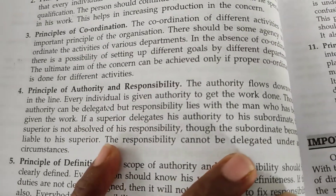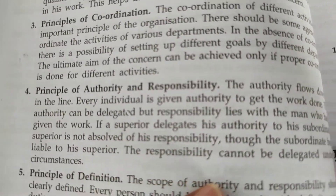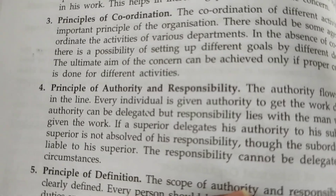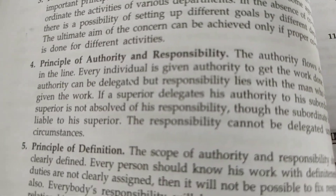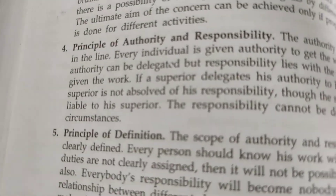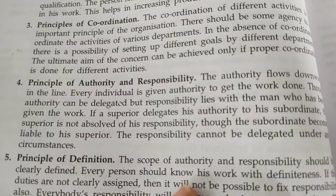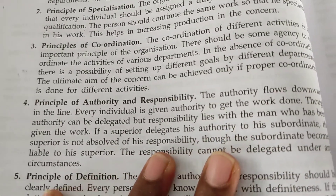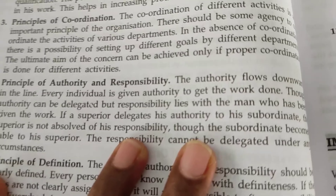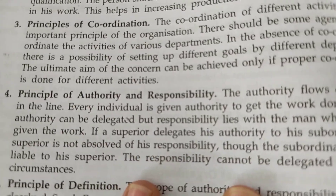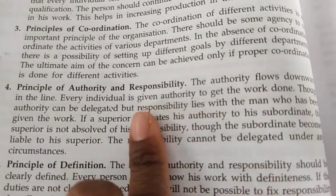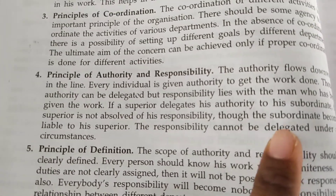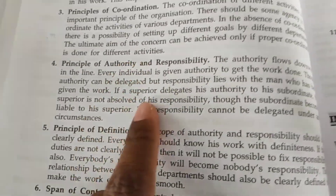Next is the principle of authority and responsibility. Authority flows from upward to downward — top-level people exercise authority over the middle level, and middle-level over the lower level. Authority is divided and given, but with that authority they must also have responsibility. Authority can be allocated and delegated, but responsibility cannot be delegated. If a manager delegates his authority to subordinates in his absence, his responsibility remains: he must ensure the work assigned is completed on time.